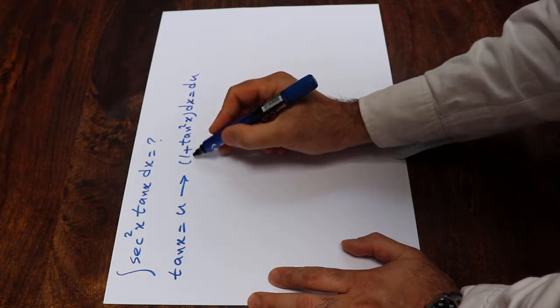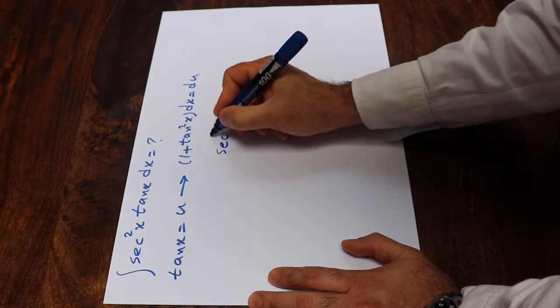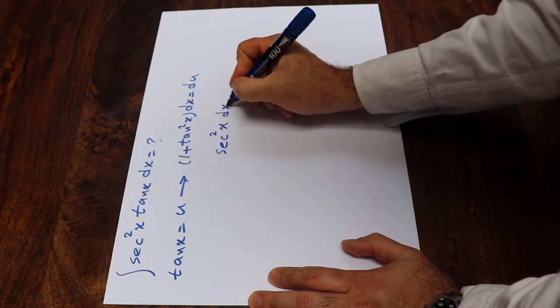From trigonometry, we know that 1 plus tangent squared x is actually equal to secant squared x, so secant squared x dx will be equal to du.